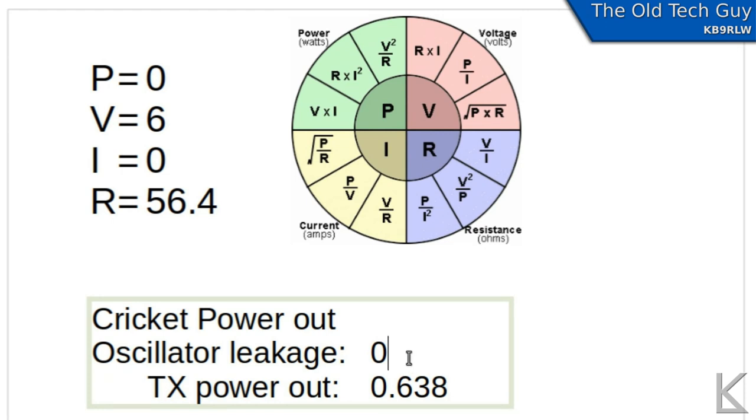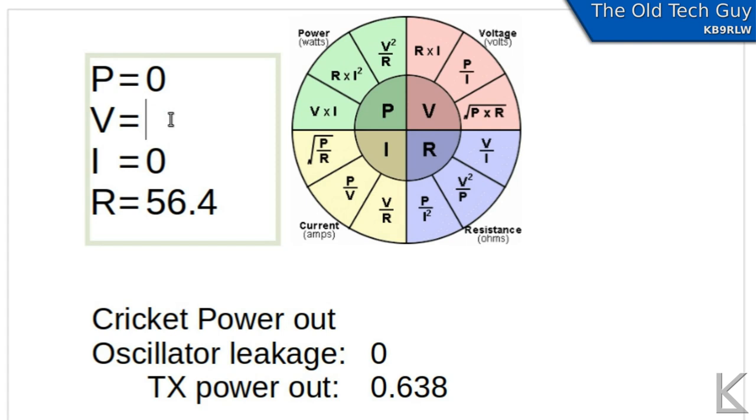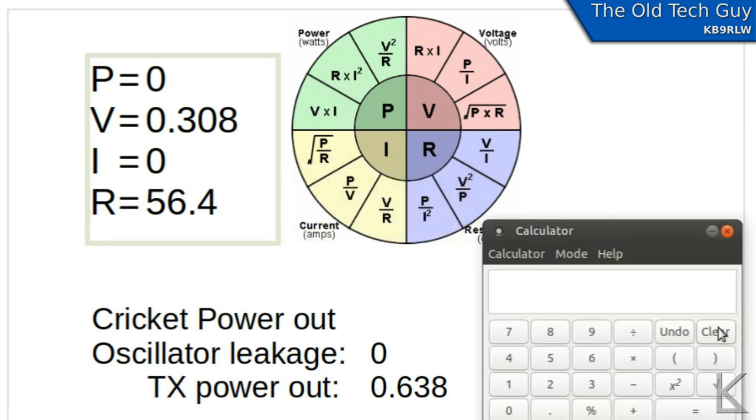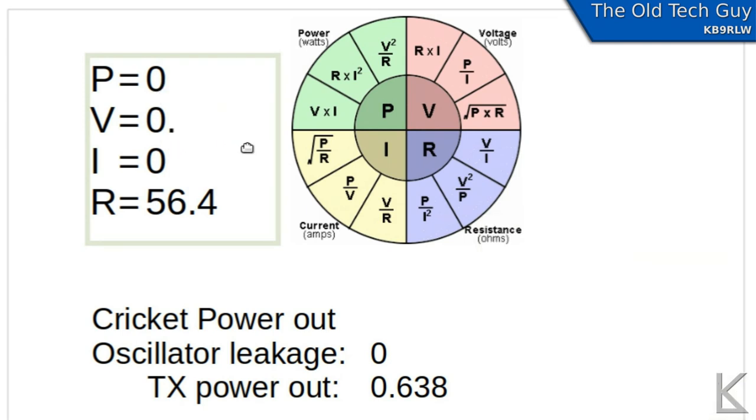Now the other thing I was curious about was the oscillator leakage and we did measure that. Remember we measured that voltage, that peak to peak voltage, at 0.308, 308 millivolts. But again we can't work with the peak value. We need to work with the average. So let's take our calculator and let's figure out what 0.308 times 0.3535 is. So 108. That's an 8. So I'll round this up to a 9. So we'll put 0.109. So that's our voltage.